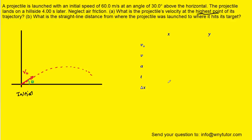We now move on to part B. Just as in part A, we mark the initial position and the final position. In part B, we're asked for the straight-line distance from where the projectile was launched to where it hits the target. The target is not at the highest point — it's a bit beyond that. We mark that point as 'final,' and the straight-line distance from launch to that position we'll call d. That's what we're looking for.